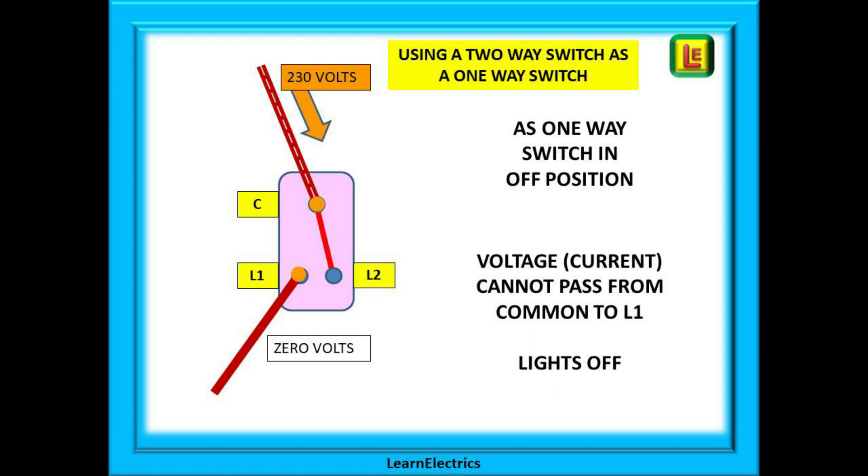In this drawing we have started with a switch in the position common and L2. This means that electricity cannot get to the terminal L1 and so the switch is in the off position. Electricity cannot flow, the switch is off, the lights are off.